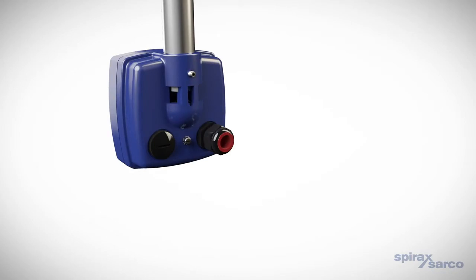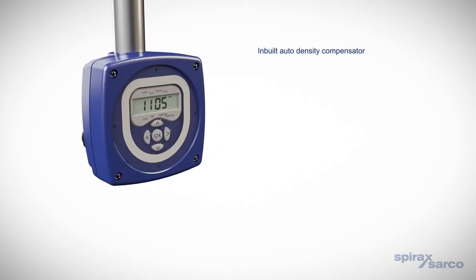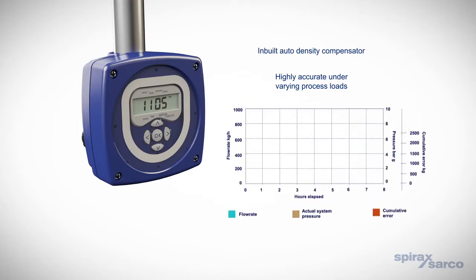Designed for steam, the TFA flow meter incorporates an inbuilt automatic density compensator, which eliminates inaccuracies caused by changes in steam density. This is necessary as the pressure in steam systems almost always fluctuates. Unless this is taken into account, the accuracy of the measured flow results will be affected.